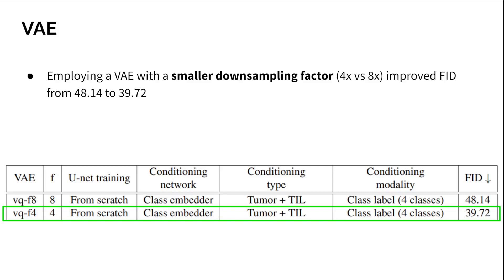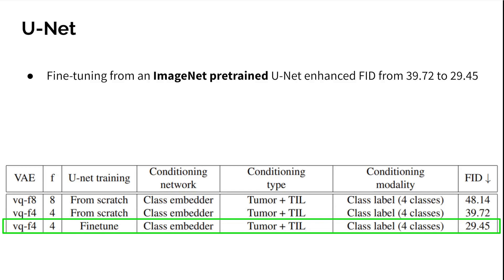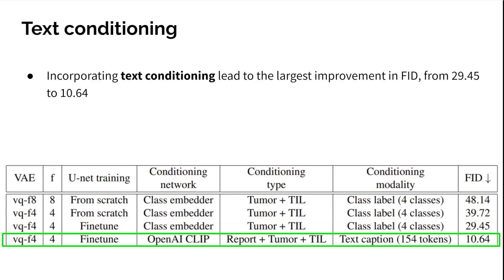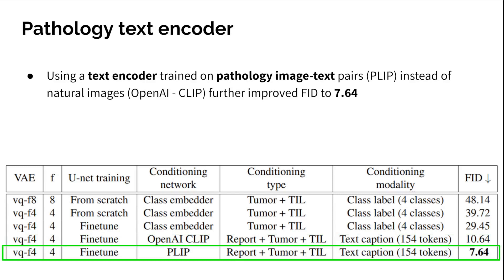We also observe that fine-tuning from an ImageNet pre-trained U-Net denoiser enhances the FID from 39 to 29. We then assess the benefit of introducing text summaries. The combination of text reports and patch-level statistics significantly reduces the FID from 29 to 10.64, and this improvement outperforms the gains achieved solely through architectural enhancements. As an ablation, we use the PLIP encoder, a CLIP model trained on pathology image-text pairs, instead of the OpenAI CLIP encoder used by stable diffusion, which further improves the FID to 7.64.